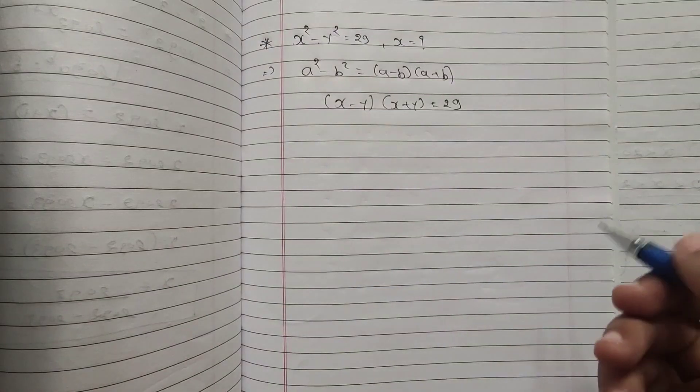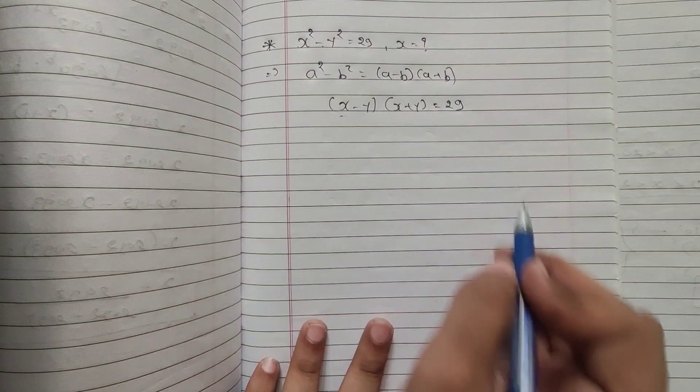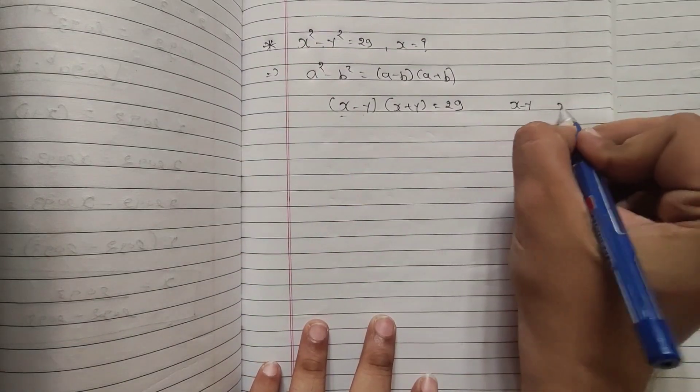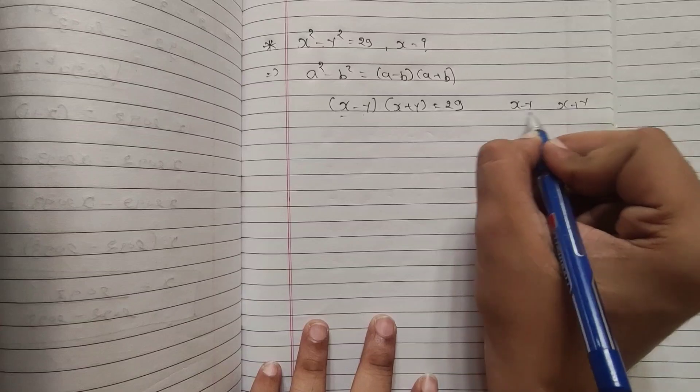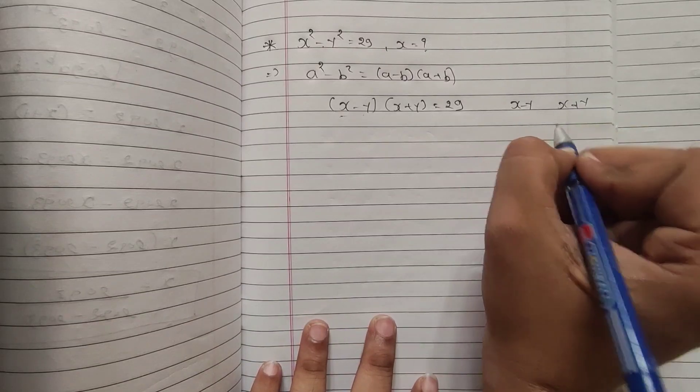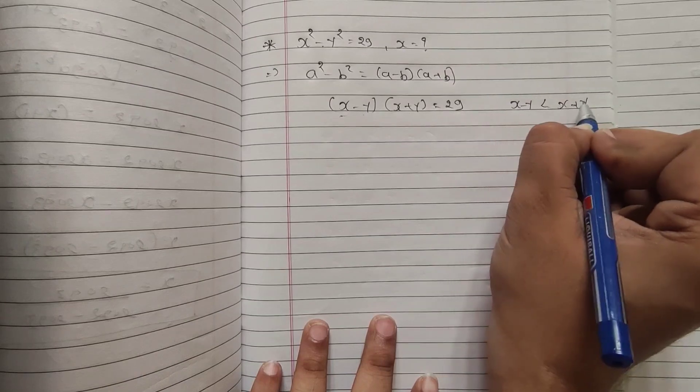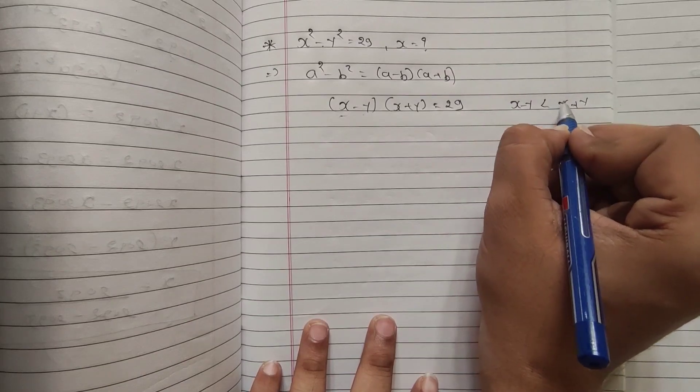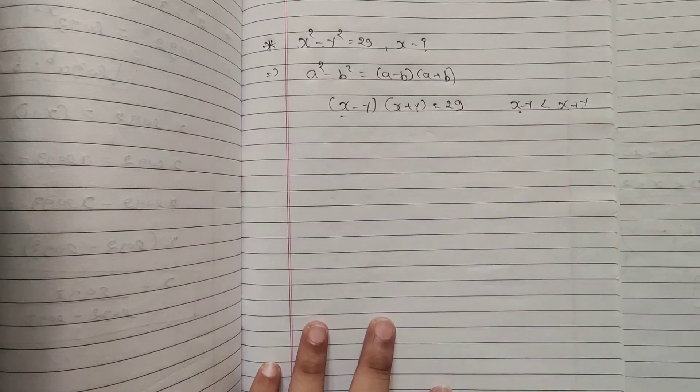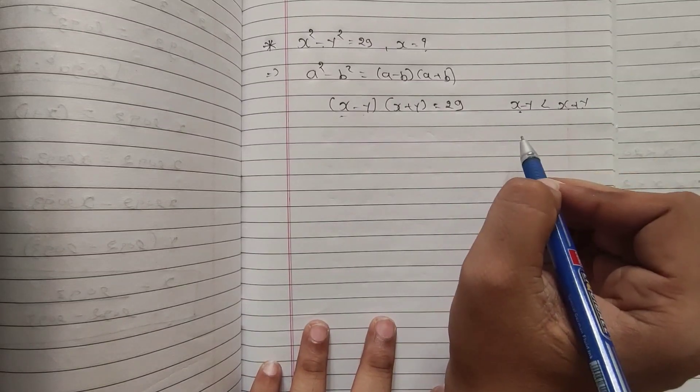Now think about one thing: here I have x minus y and here I have x plus y, which will be greater from both of these? Obviously x plus y is going to be greater than x minus y. Suppose x equal to 2 and y equal to 3, then it will become 5 and it will become minus 1. So x plus y is greater than x minus y.